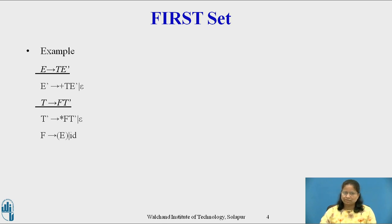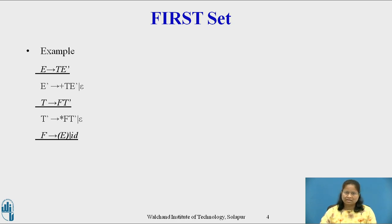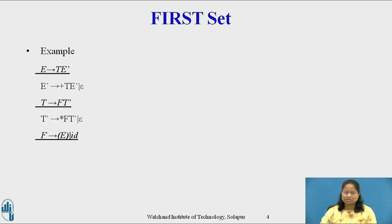Now First(T E') includes all non-epsilon symbols of First(F), and we also add the non-epsilon symbols of First(T') if epsilon is in First(F). First(F) comes from First((E)) and First(id). First((E)) is left parenthesis, and First(id) is id since id is a terminal. Hence First(F) = { '(', id }. As First(F) does not contain epsilon, First(T) = First(F). And since First(T) does not contain epsilon, First(E) = First(T).